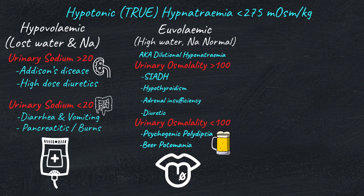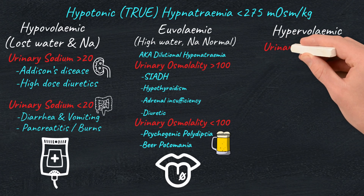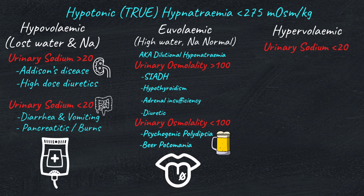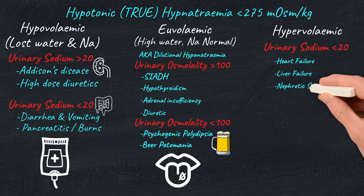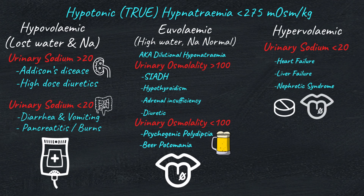Finally, if your patient is fluid overloaded, then it's hypervolemic hyponatremia. Again, we look at the urinary sodium. If urinary sodium is less than 20, then the loss is not from the kidneys, and the causes of fluid overload include heart failure, liver failure, or nephrotic syndrome causing hypoalbuminemia. Treatment is diuretics along with fluid and sodium restriction.